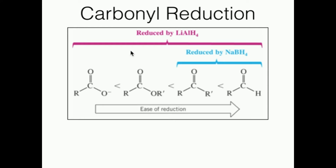Here's a good look at some of the reagents of carbonyl reduction, or CO bond reduction. We have two main reagents we're going to use heavily. One is called sodium borohydride, NaBH4. The other is called lithium aluminum hydride, LiAlH4. Just like we had strong and weak oxidants, we have weak and strong reductants. Sodium borohydride is a weak reductant or weak reducing agent. Lithium aluminum hydride is a strong reductant or strong reducing agent.